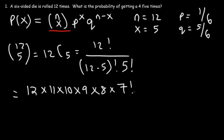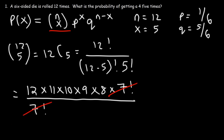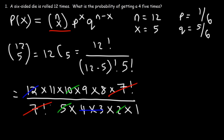7 factorial is 7 times 6 times 5 times 4 times 3 times 2 times 1. Since 12 minus 5 is 7, we can write that as 7 factorial and cancel the two 7 factorials. 5 factorial is 5 times 4 times 3 times 2 times 1. 4 and 3 multiply to 12, canceling with the 12 on top. 5 times 2 is 10, canceling with the 10. What we have left is 11 times 9 times 8. 11 times 9 is 99, and 99 times 8 is 792. So this portion of the formula equals 792.